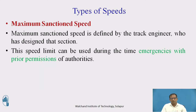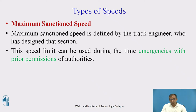After maximum speed, there is another speed type: maximum sanction speed. The maximum sanction speed is defined by the track engineer, who knows the maximum allowable speed beyond the maximum permissible speed. This is only used during emergency conditions with prior permission from the authorities. Without that permission, we are not supposed to operate at maximum sanction speed.